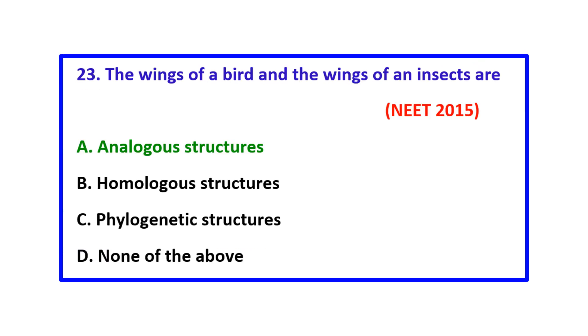Question: The wings of a bird and the wings of an insect are — the correct answer is analogous structures.